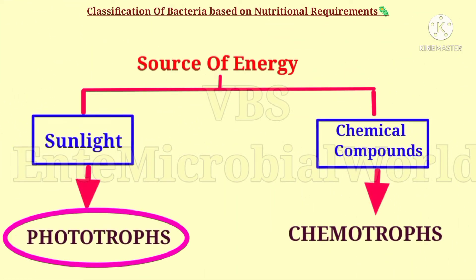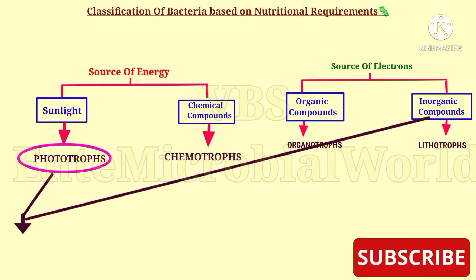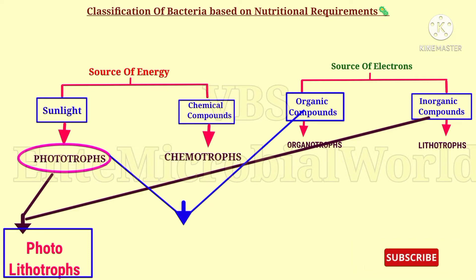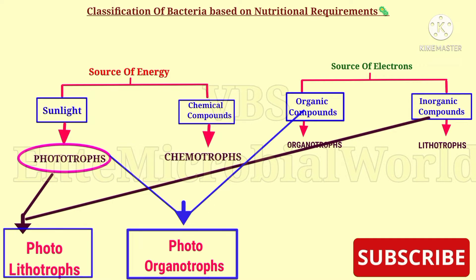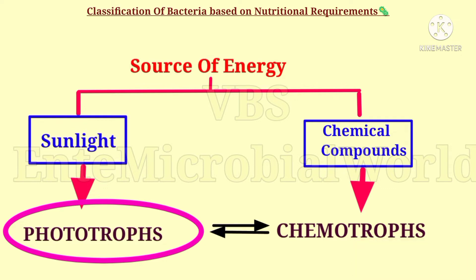Next we are going to see about phototrophs. Some phototrophic bacteria use inorganic compounds as their source of electrons and are called photolithotrophs. Some phototrophic bacteria use organic compounds as their source of electrons and are called photoorganotrophs. Some phototrophic bacteria under certain circumstances can grow as chemotrophs.